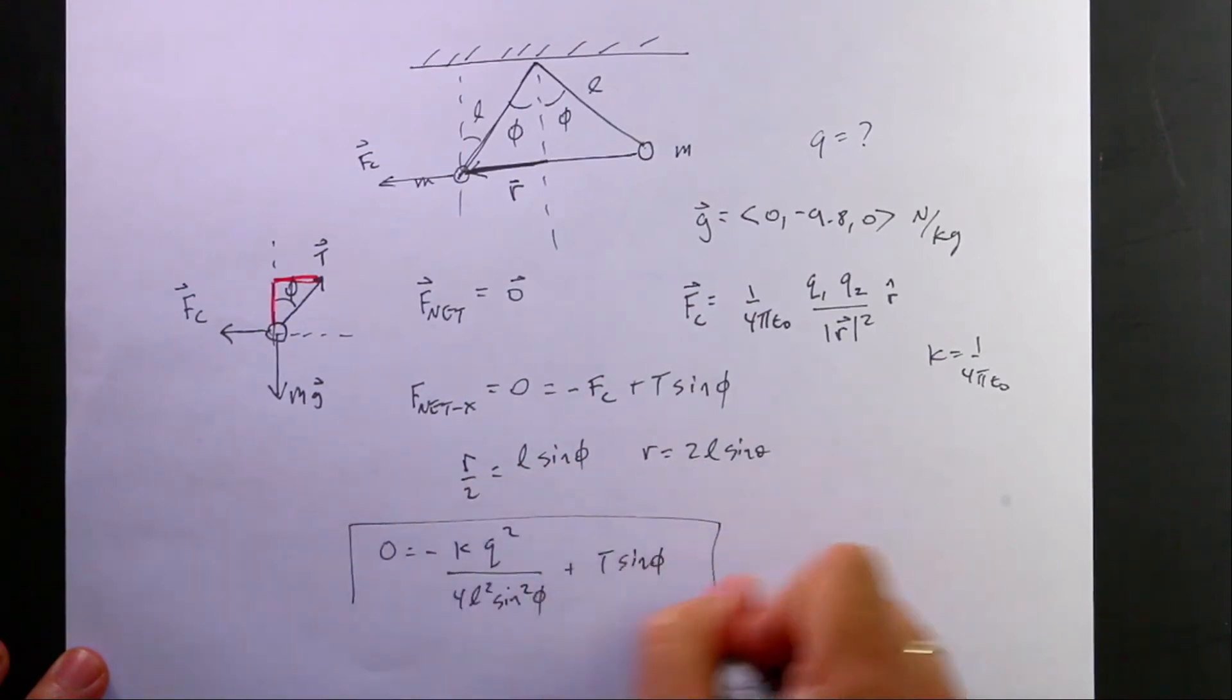So that's one equation. Now, I assume that I can get values for Q and L and phi, but I don't know, and not Q, I'm trying to find Q, but I don't know T. So I can't really solve this equation.